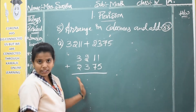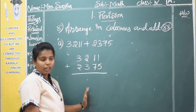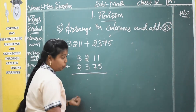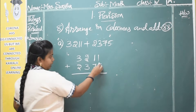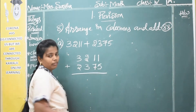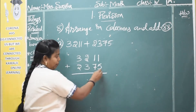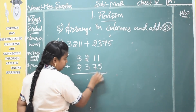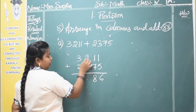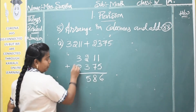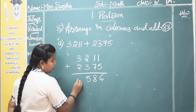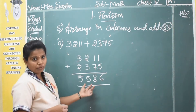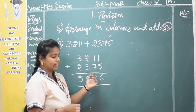So here we have arranged the numbers in the columns. Now you have to do the addition. So 5 plus 1 is 6. 7 plus 1 is 8. 3 plus 2 is 5. And 3 plus 2 here again is 5. So what is the answer? 5586.